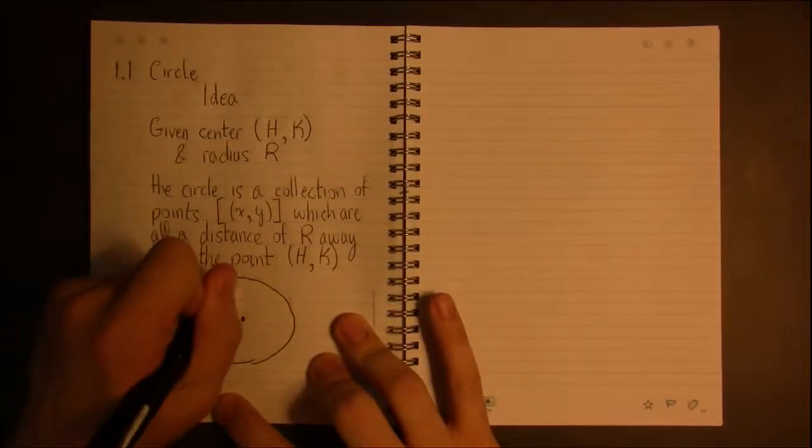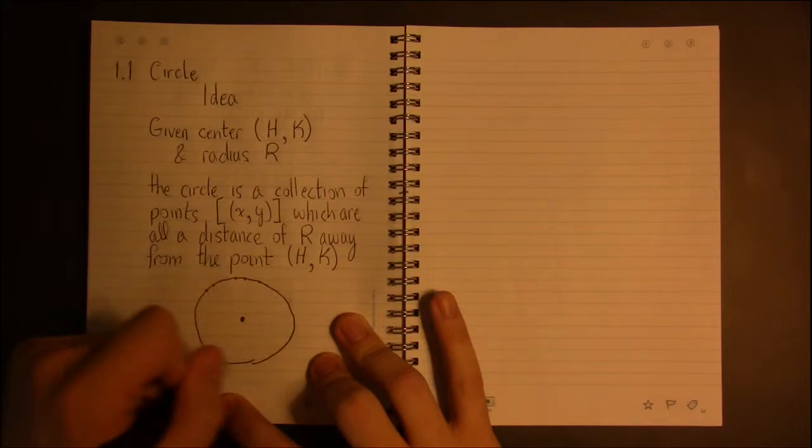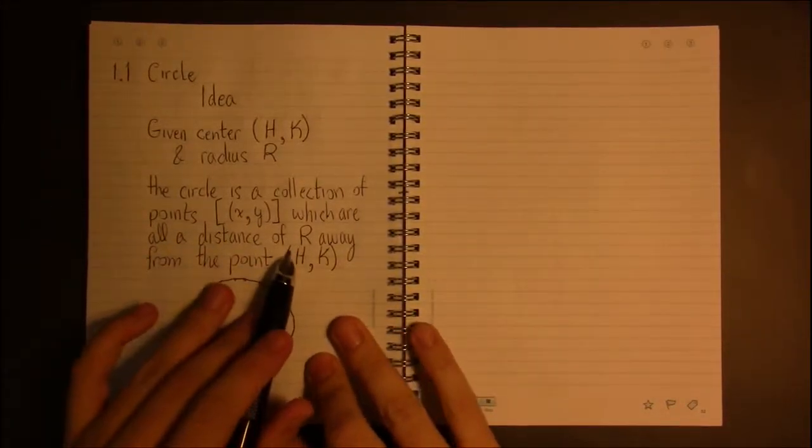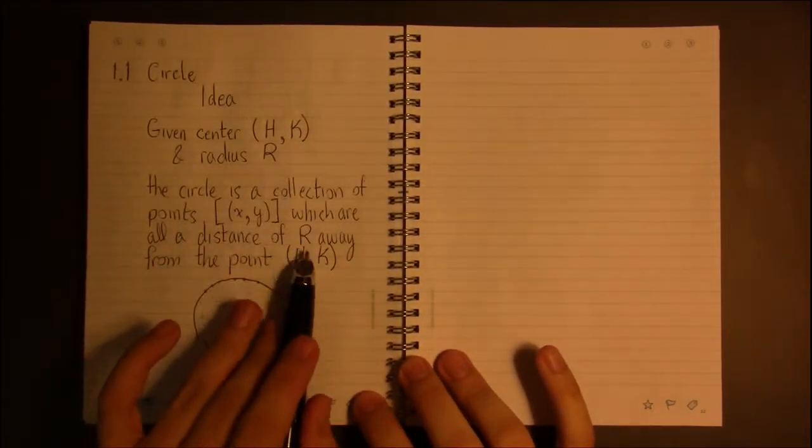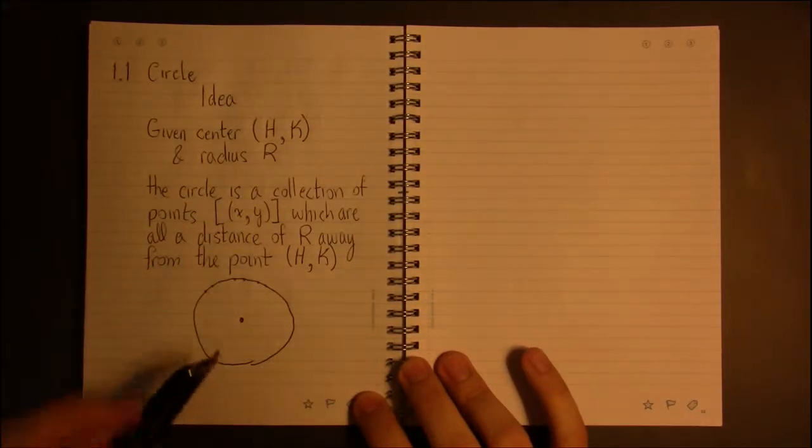which happens to be a fixed distance of some radius r away from the center of this circle.